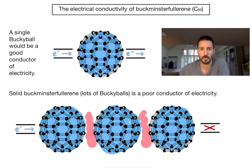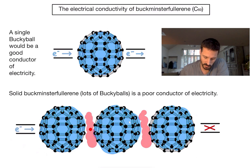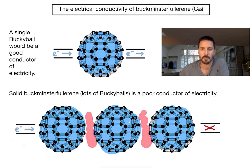Now as a little bonus note, if I want to turn that poor conductor into an excellent conductor — a superconductor — what I can do is add atoms of group one metals, which jump into my gaps and then allow that substance to conduct electricity very, very well. So because of the gaps between individual bucky balls, the substance Buckminster Fullerene is considered a poor conductor of electricity.